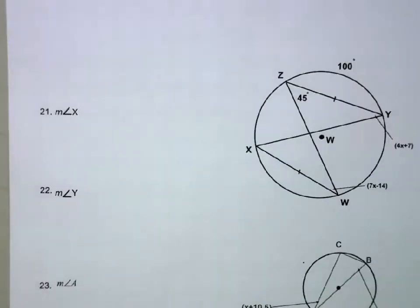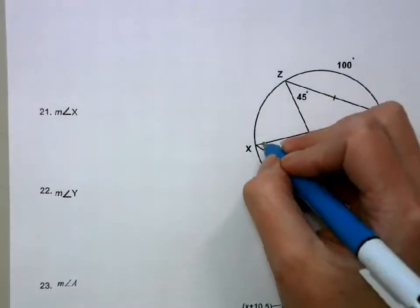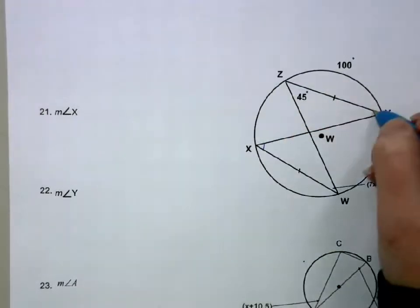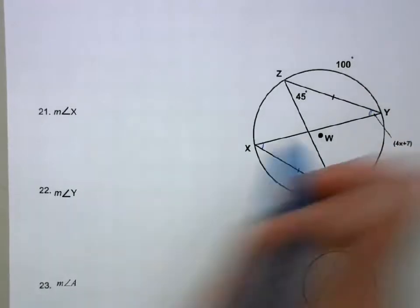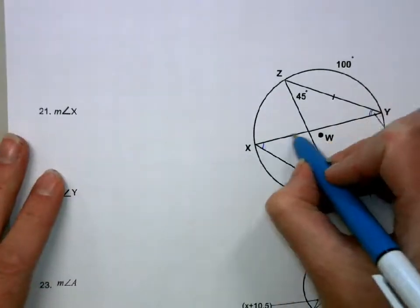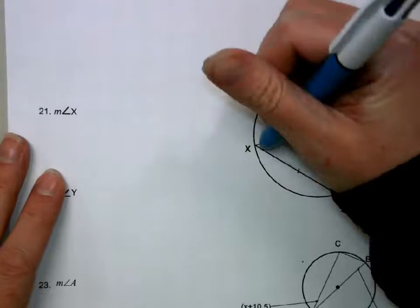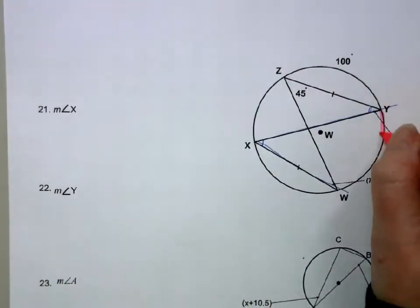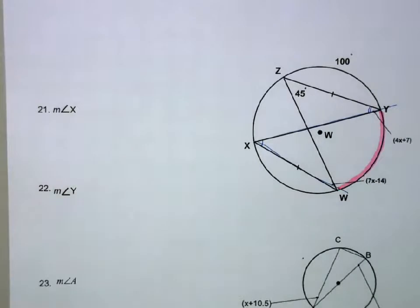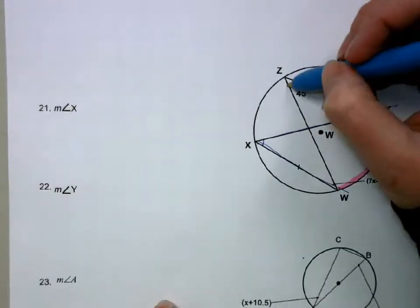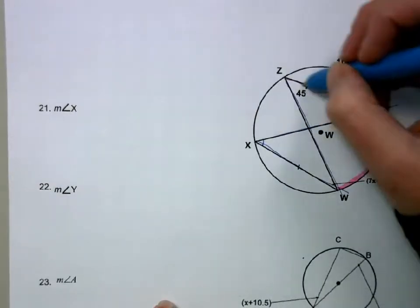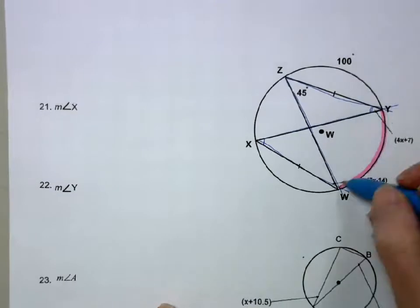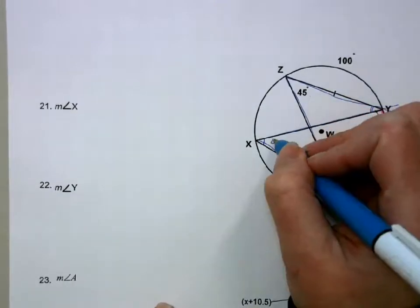In this diagram, we are trying to find the measure of angle X and the measure of angle Y. Well, for X, if you look at it, it intercepts this arc right here. And up here, this angle Z also intercepts that arc. So if this is 45, this must also be 45.